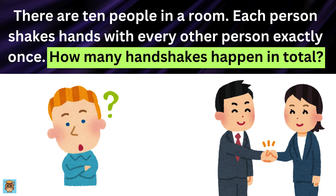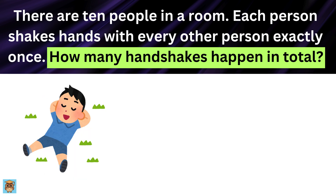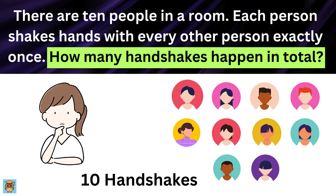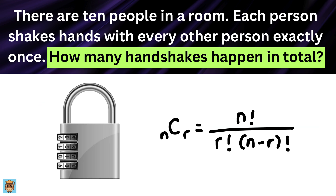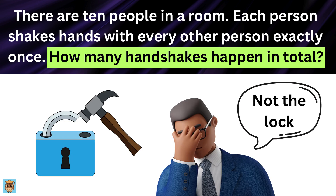Take a moment to think about this. At first glance, it might seem very simple. You might think, if there are ten people, there must be ten handshakes. But hold on — is that really the case? This is a classical problem in combinations, which is a branch of mathematics that deals with counting and arranging things. Let's break it down step by step, using very simple logic.